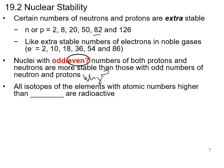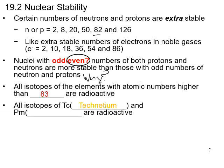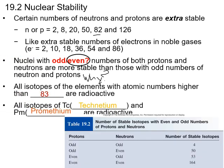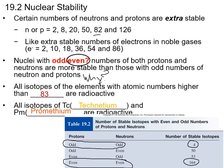All isotopes of elements with atomic numbers higher than 83 (bismuth) are radioactive. All isotopes of technetium and promethium are also radioactive. A table shows the number of stable isotopes with even and odd numbers of protons and neutrons: odd-odd gives only 4 stable isotopes, while even-even gives 164 stable isotopes. Even numbers of protons and neutrons clearly favor stability, while even-odd or odd-even combinations give about 50–53 stable isotopes.